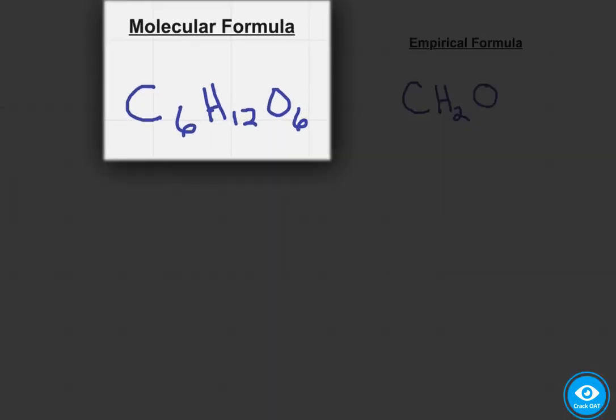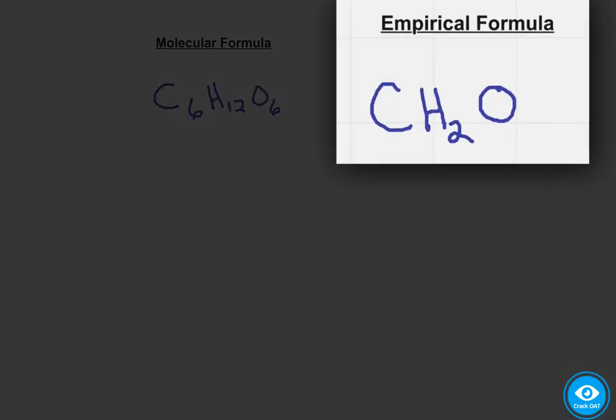So here we have the molecular formula for glucose, C6H12O6, and its empirical formula, CH2O, again just meaning for every one carbon there are two hydrogens and one oxygen.